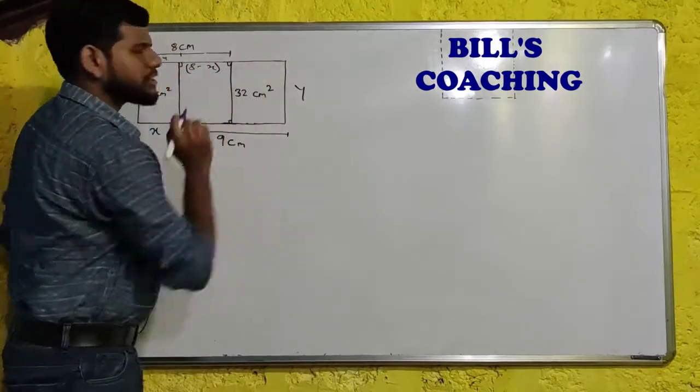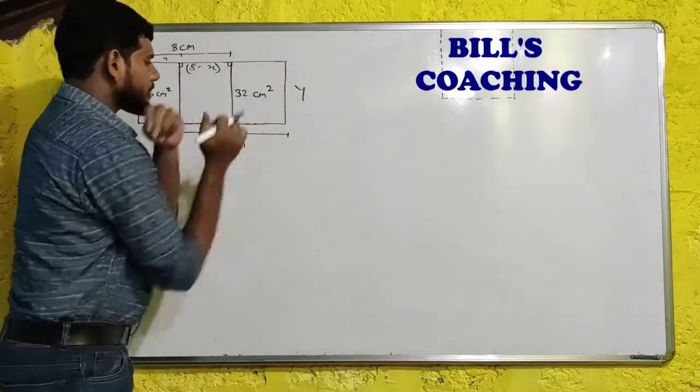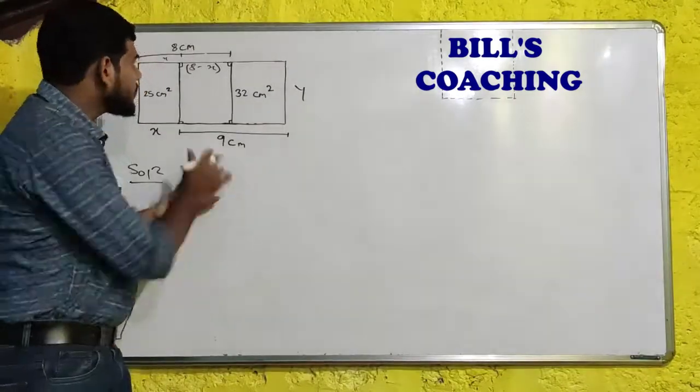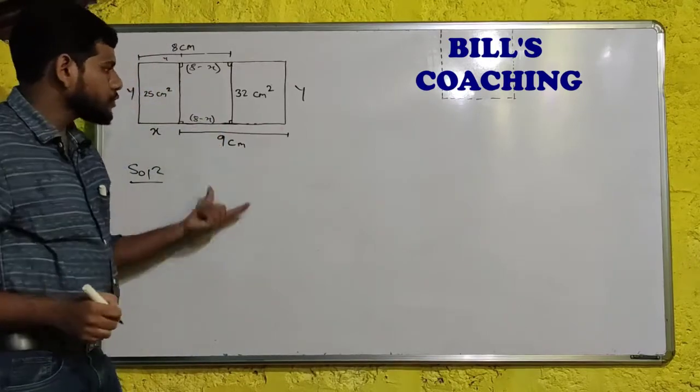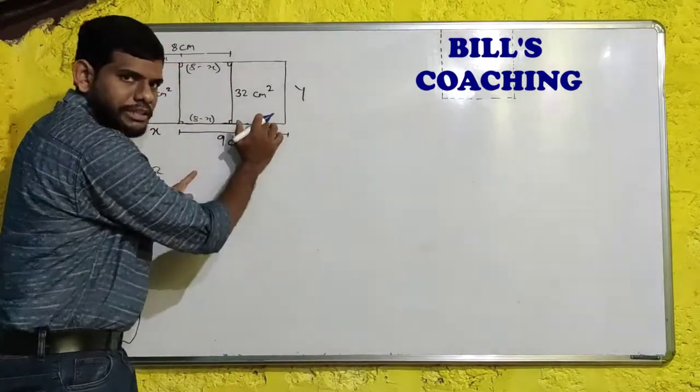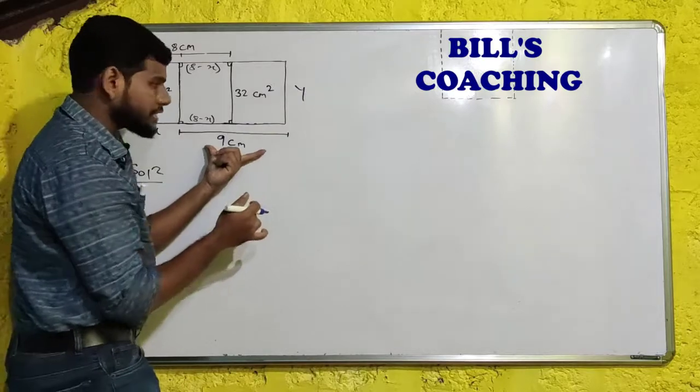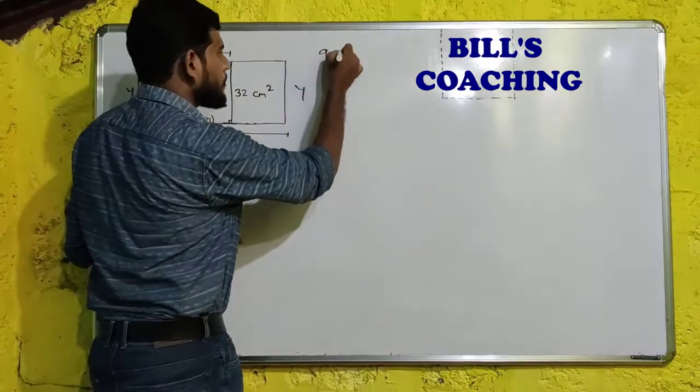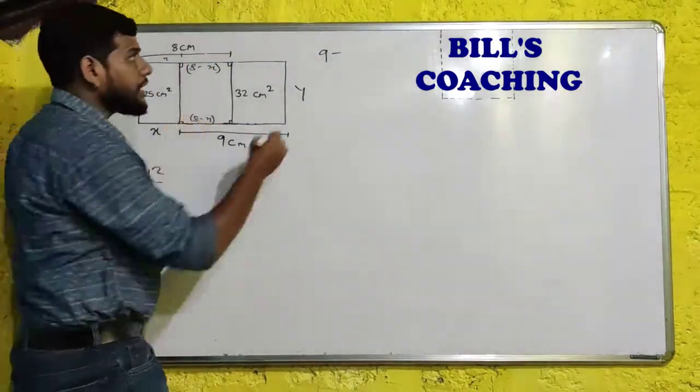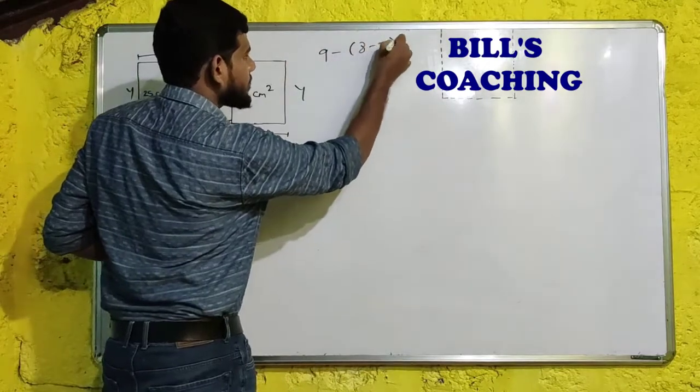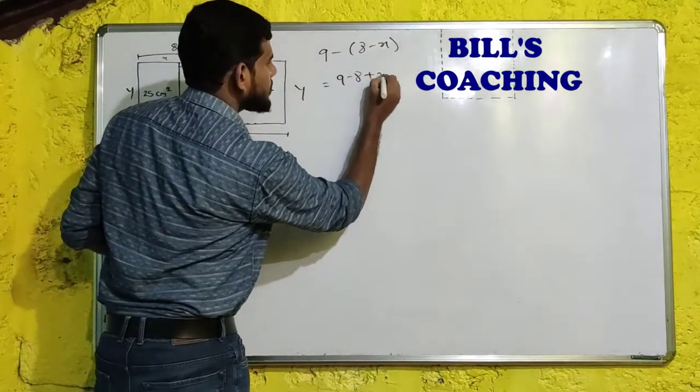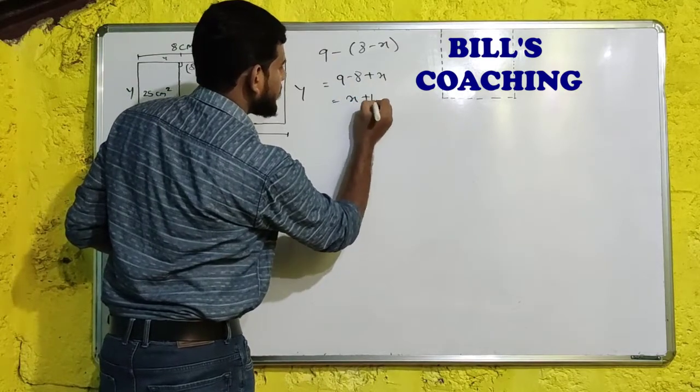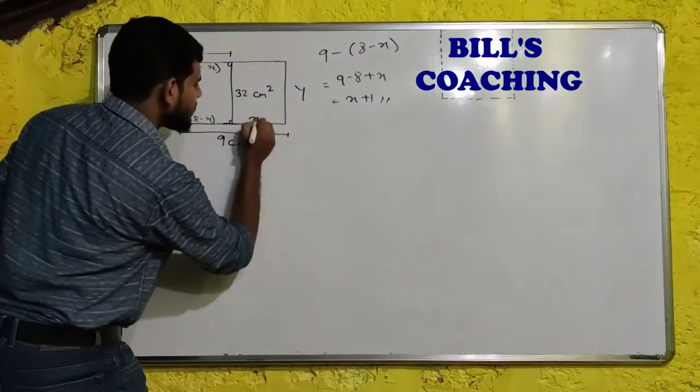Now, what is this side? This side. This complete is 9. This is 8 minus x. I will write it over here. So we can say this as 9 minus (8 minus x). I will solve it over here. So we can say 9 minus (8 minus x), right? So I will write it as 8 minus x. So this will become 9 minus 8 plus x. So after solving, it will become x plus 1. So I will write it here, x plus 1.